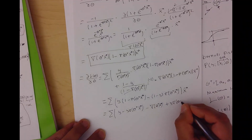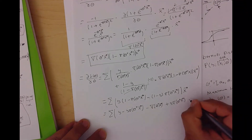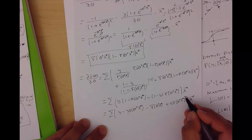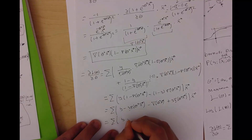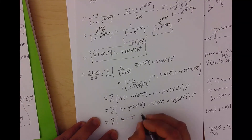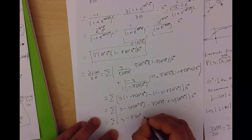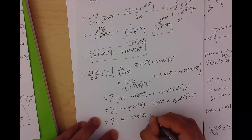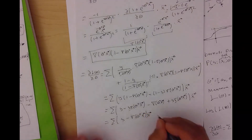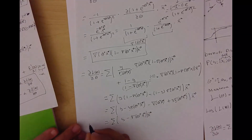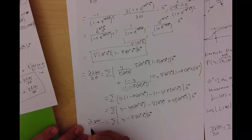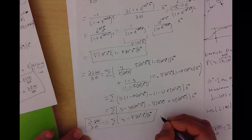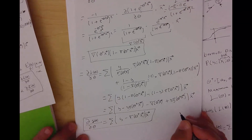So the derivative of the Jacobian function is the summation over i of (y_i minus y-hat_i) multiplied by x. This is a super important function because we will use this to do the optimization.